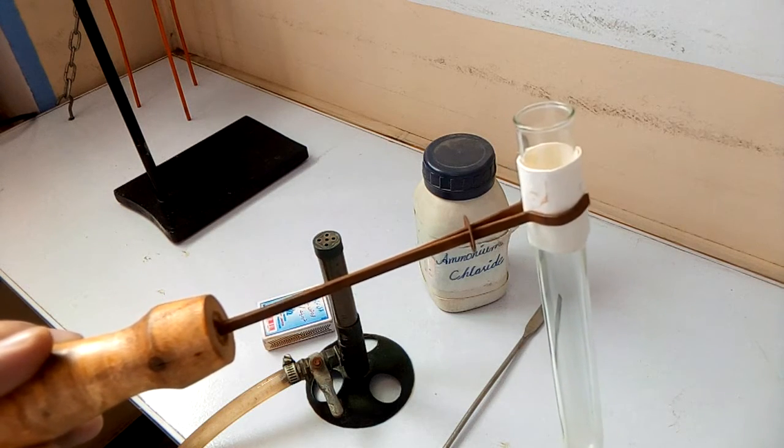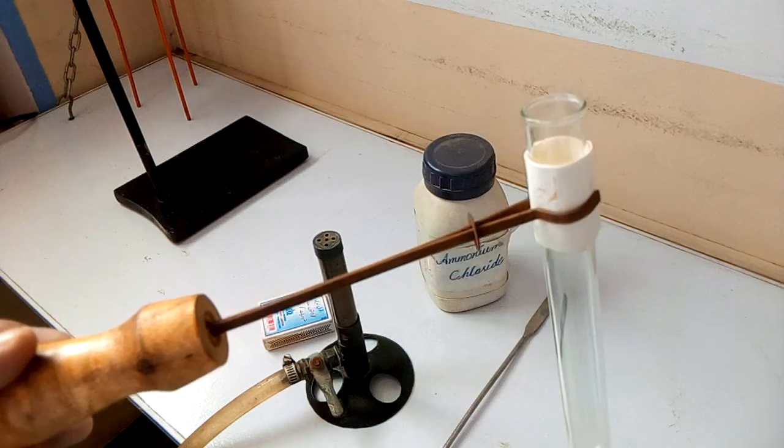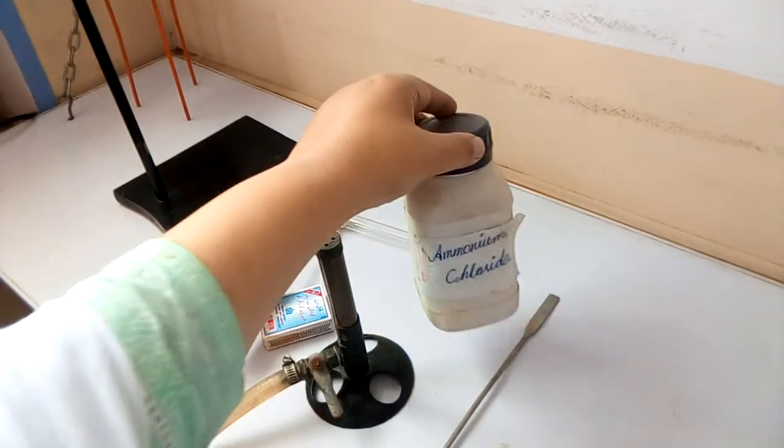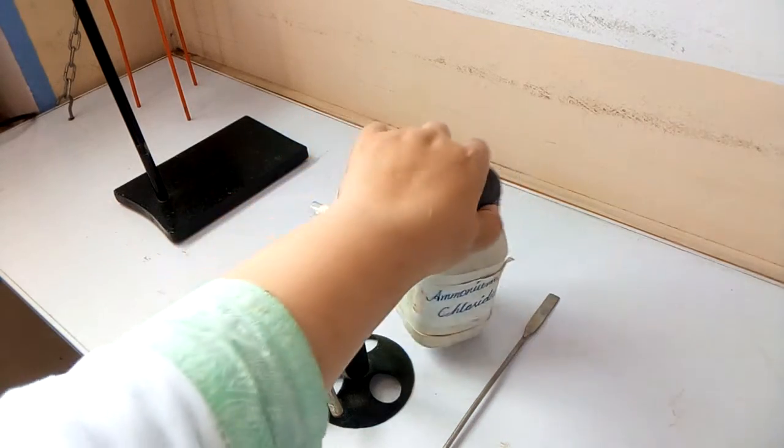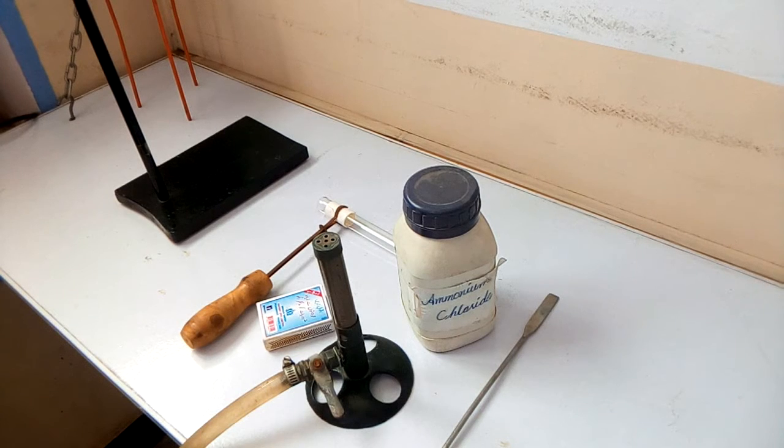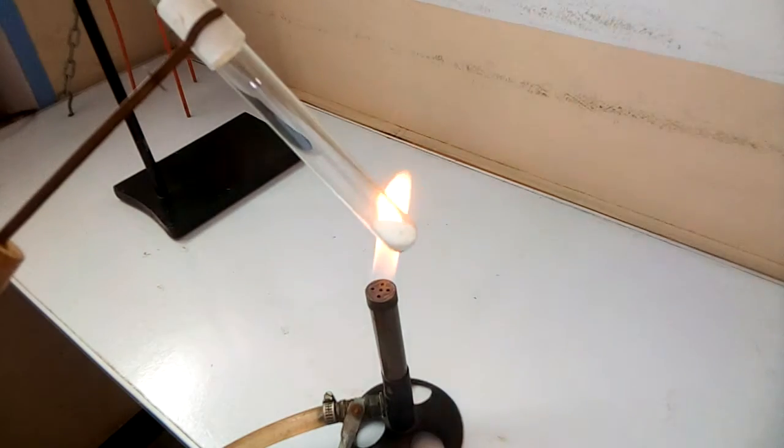We also need ammonium chlorite, we will take 5 grams of this, a matchbox, and a Bunsen burner. Now we will take about 5 grams of solid ammonium chlorite in a clean dry test tube.